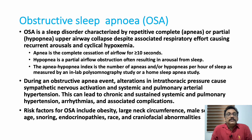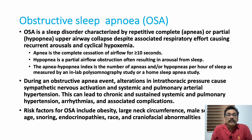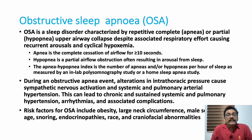During obstructive events during sleep, alterations in intrathoracic pressure produce sympathetic nervous system activation, leading to systemic and pulmonary hypertension. This can produce chronic pulmonary hypertension features similar to COPD or ILD patients, with elevated BP, arrhythmias, and associated complications. Hypoxemia and hypercarbia can produce loss of memory, lack of concentration, and daytime sleepiness.